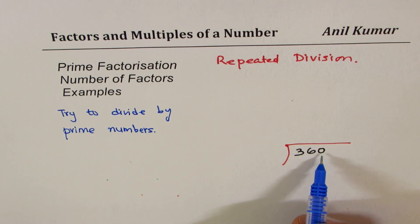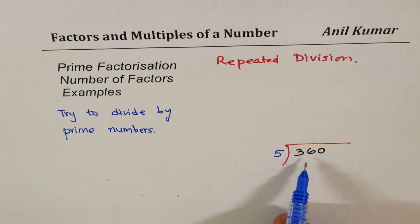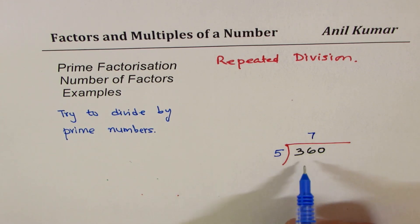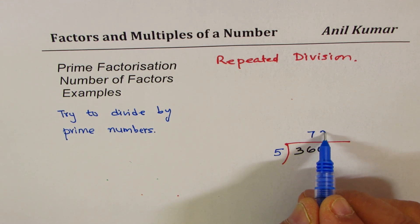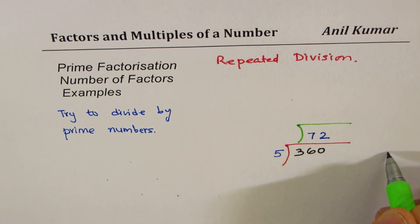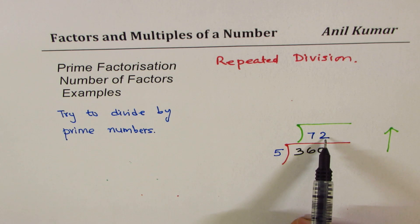You can see that 360 ends with 0, so it could be divided by 10 or by 5. Since 5 is a prime number, I'm using 5, not 10 — that is important to understand. So we're dividing by 5. 5 times 7 is 35, and then we get 10, so we get 72. Now we get a number in the quotient and we could divide this further with repeated division. 72 could be divided by 2 since it's an even number.